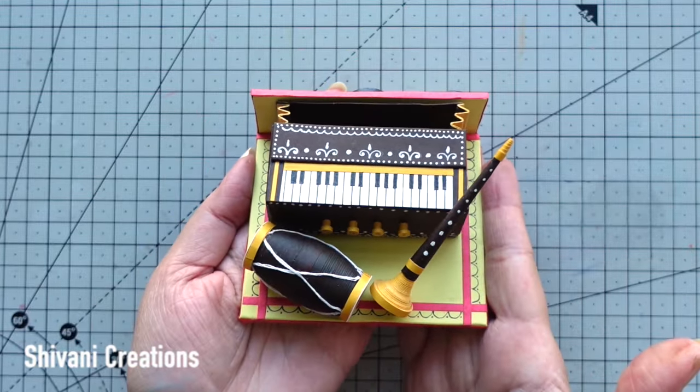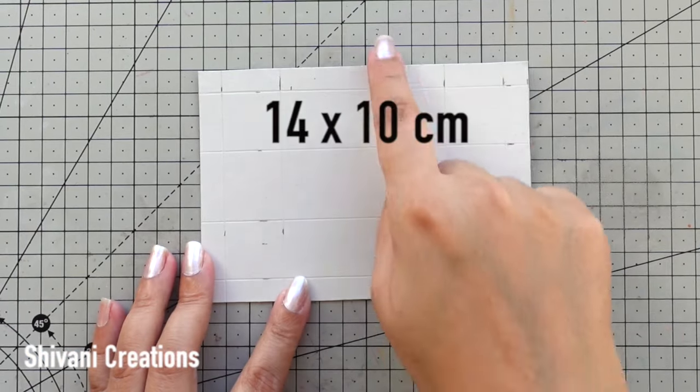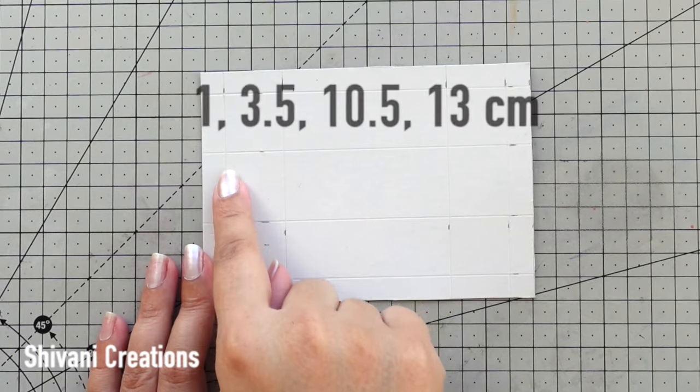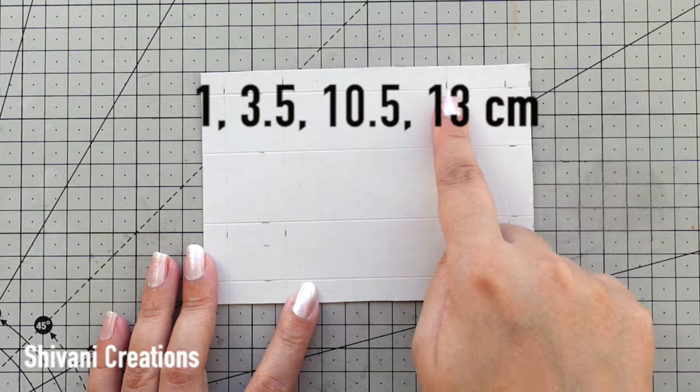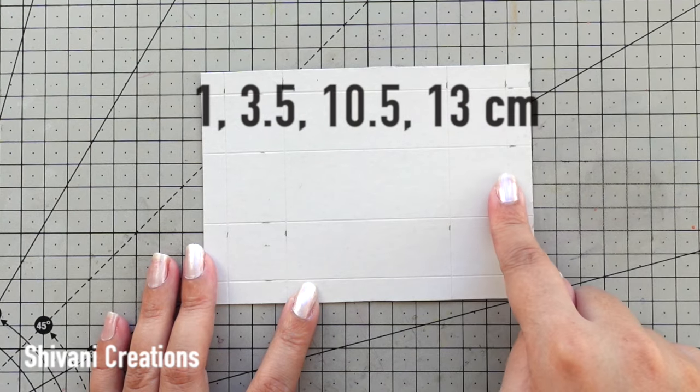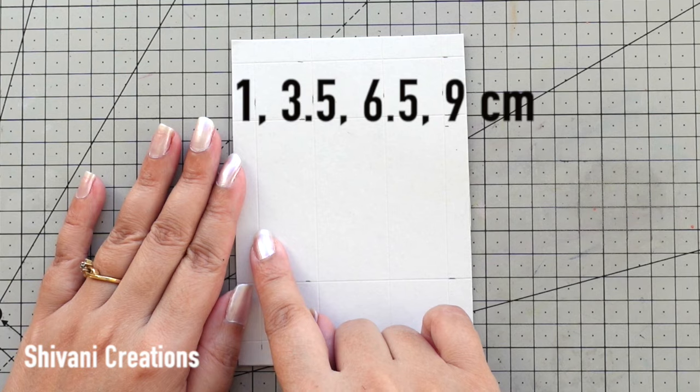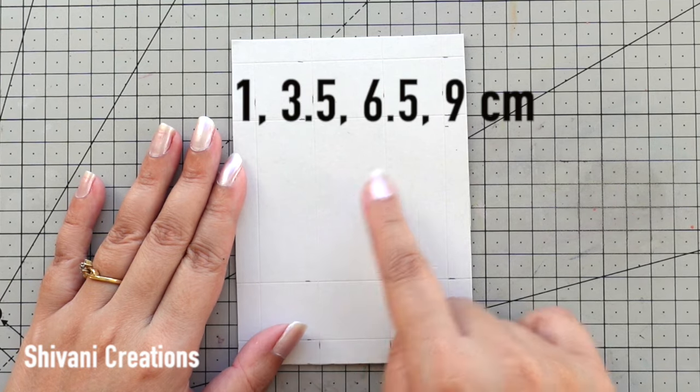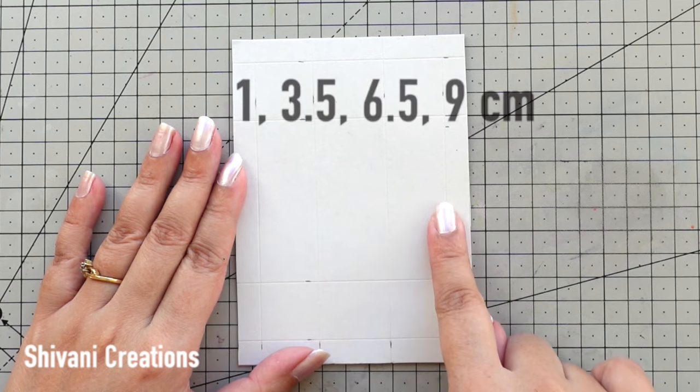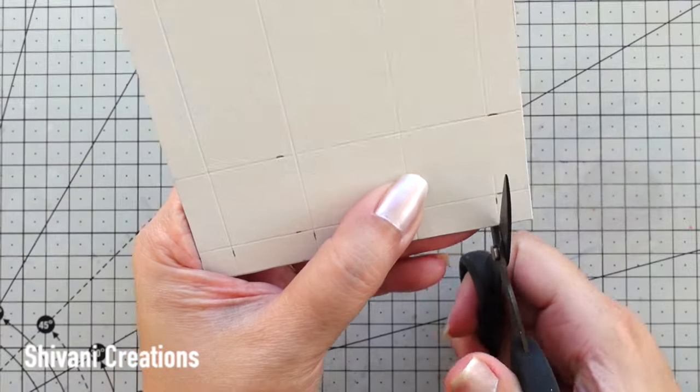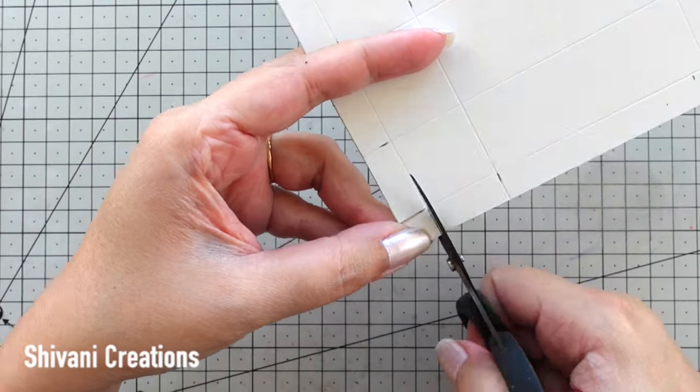Here I am taking 14 by 10 centimeter thick sheet. From the left side I have creased at 1, 3.5, 10.5 and 13 centimeters. Just rotating the sheet and from left side I have creased at 1, 3.5, 6.5 and 9 centimeters. Now I am just chopping the corners and constructing the box shape.